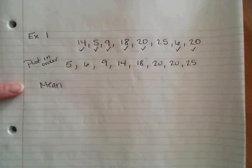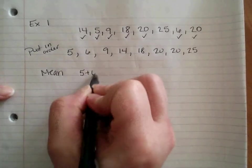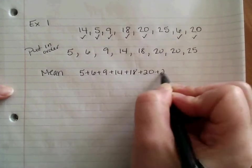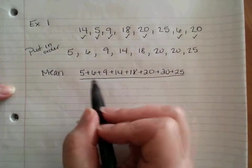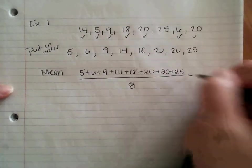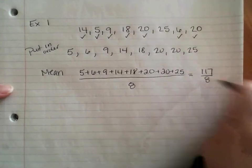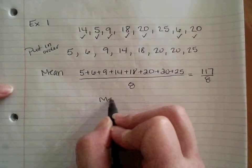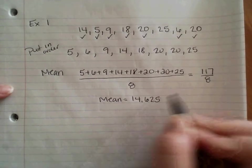So for my mean, I have to add them all up. So I have to do 5 plus 6 plus 9 plus 14 plus 18 plus 20 plus 20 plus 25. And I have to divide this by how many numbers there are. I have one, two, three, four, five, six, seven, eight different numbers. So I am going to add them all up. When I add them all up, I get 117 and I have to divide that by eight. When I take 117 and divide by eight, I get a mean, an average of 14.625.